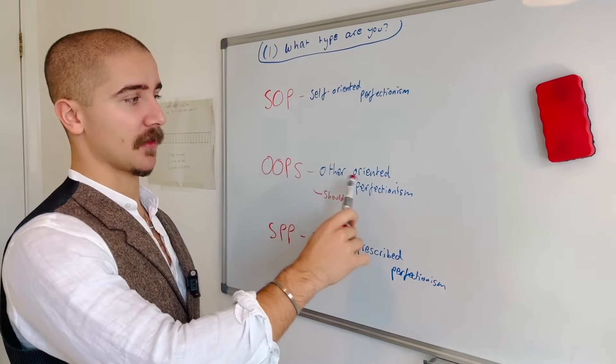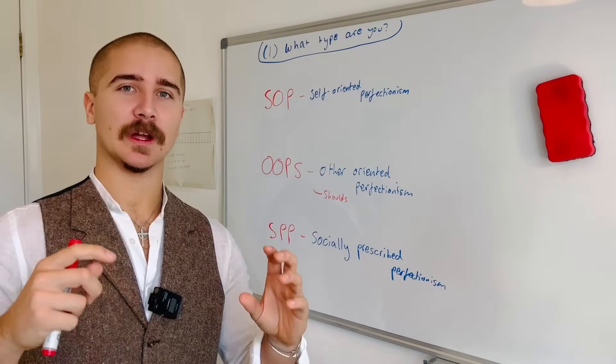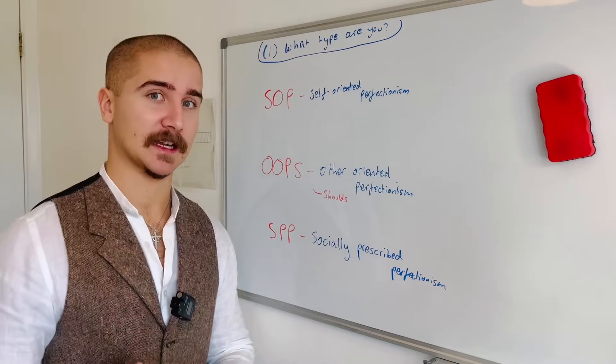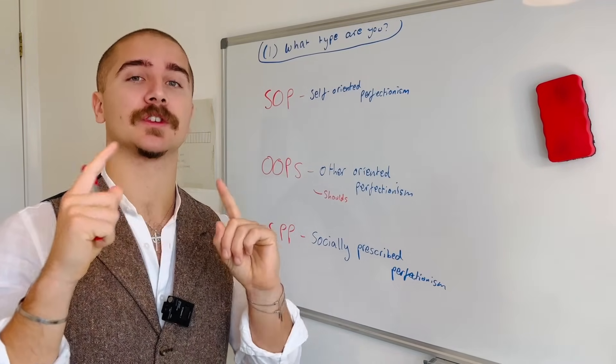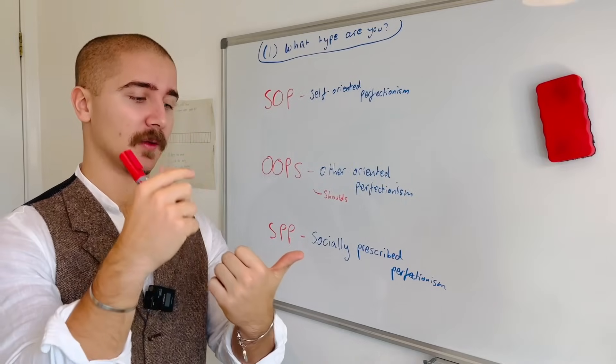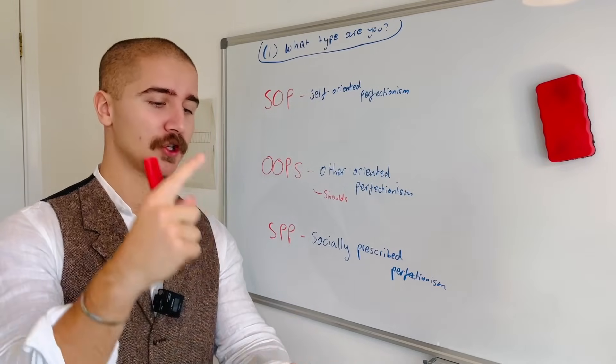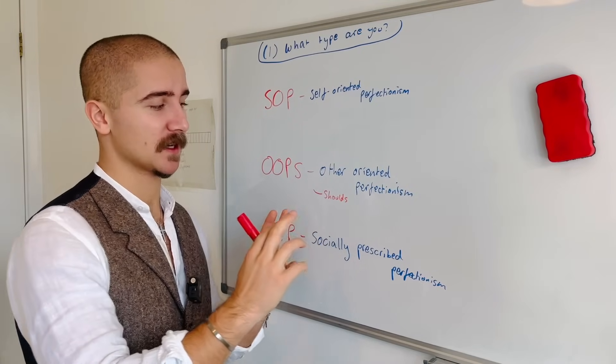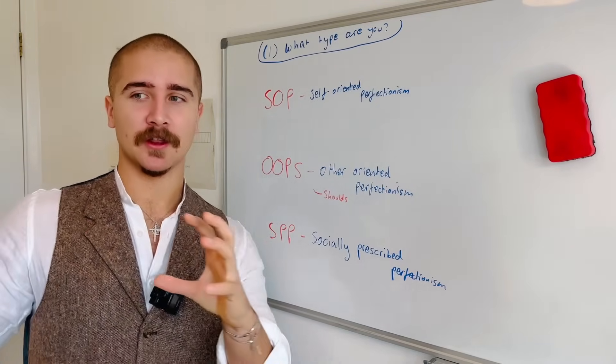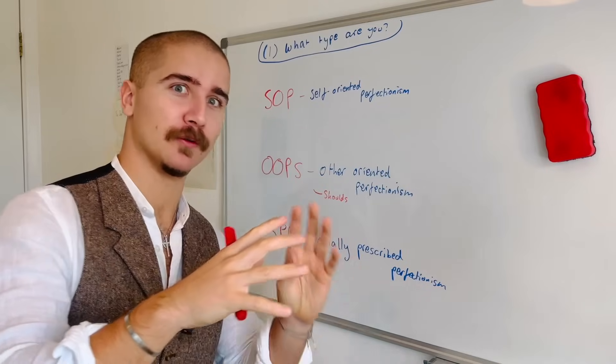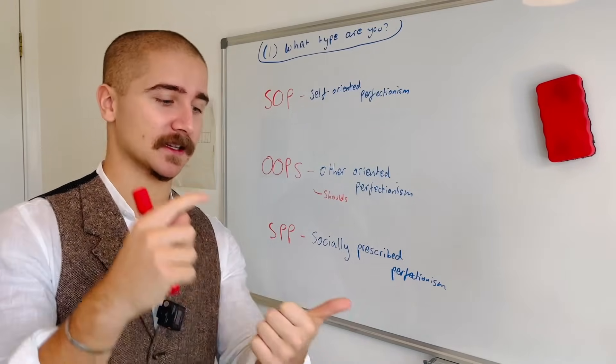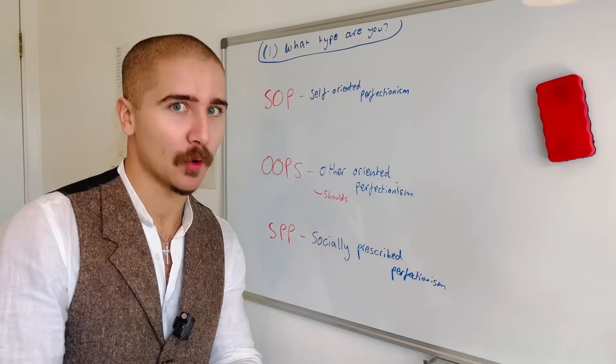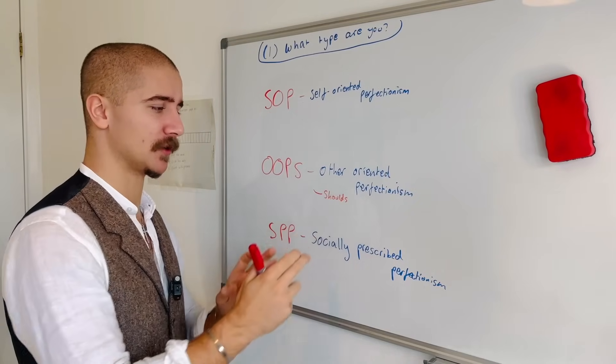Next we have OOP, other-oriented perfectionism. This is where you perceive significant others in your life as having high expectations of you that you feel you need to meet in order to please them. A significant other could be parent, coach, friends, other family members. This is where you experience something called the tyranny of shoulds - the shoulds that are thrown onto you from them about how you should act, what you should do, how you shouldn't be, what you should be more like.